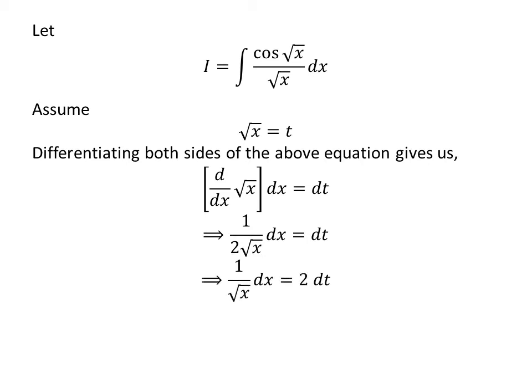Shifting 1 upon 2 to the right-hand side of the equation gives us 1 upon square root of x times dx equals 2 times dt.